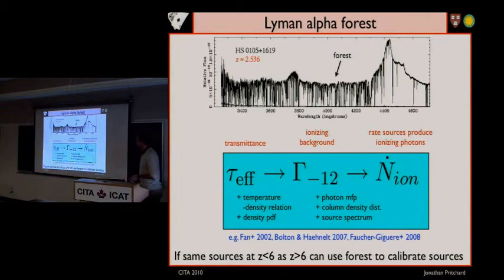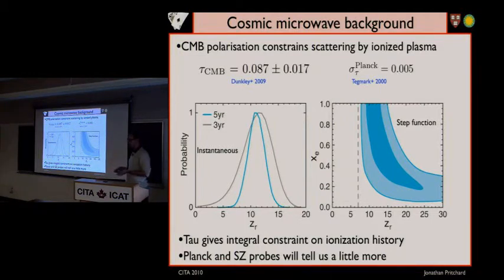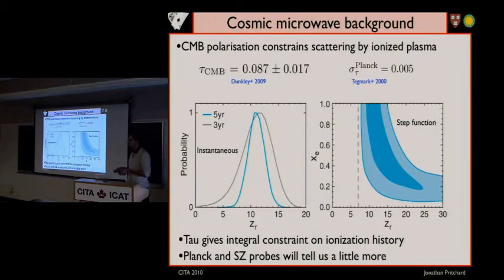The power spectrum also tells you something about the history of reionization. In principle, you can measure two to five numbers that tell you something about exactly when the reionization history is happening. At the moment, WMAP is only really giving you one, maybe two numbers — essentially just the total optical depth. Planck will do a little better, perhaps around five numbers, telling you something about when the midpoint of reionization is.